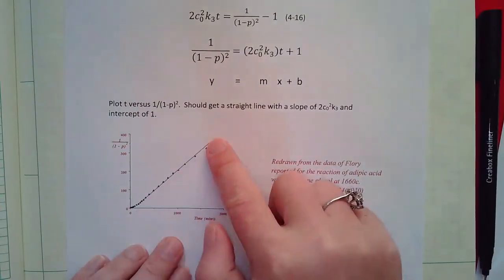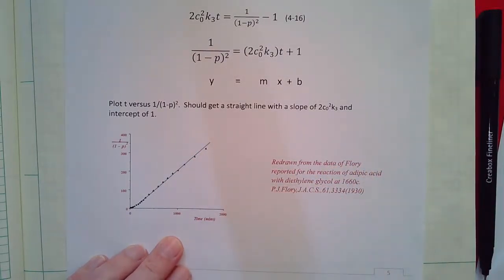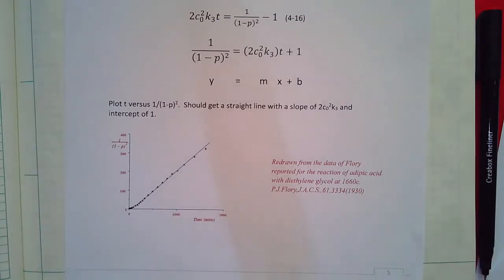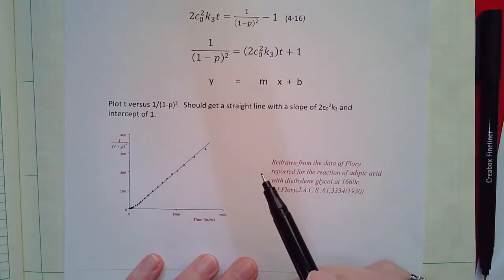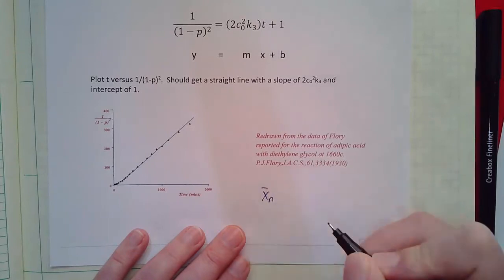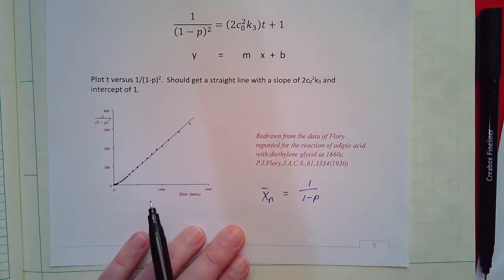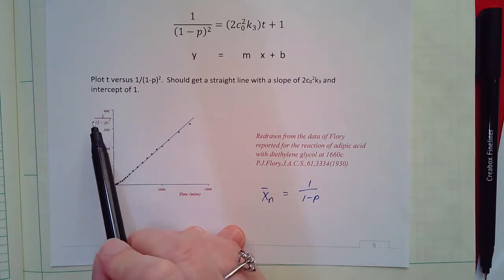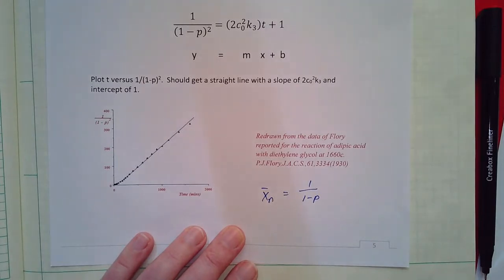This is a great fit and really useful because now we know extent of reaction as a function of time. Also note that 1/(1−p) is the number-average degree of polymerization. So 1/(1−p)² is the number-average degree of polymerization squared. The equation is really telling us the number-average degree of polymerization squared as a function of time — so not only do we know the concentration of acid or alcohol groups as a function of time, we know the chain length as a function of time.